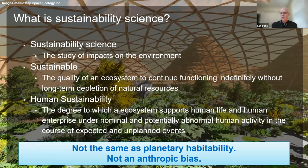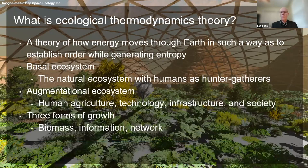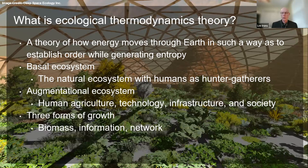In this context, we will define human sustainability as the degree to which an ecosystem supports human life and human enterprise under nominal and potentially abnormal human activity in the course of expected and unplanned events. To understand sustainability, we need to learn about ecological thermodynamics theory. Ecological thermodynamics is a theory of how energy moves through Earth in such a way as to establish order while generating entropy, resulting in an Earth that is an island of order far from thermodynamic equilibrium surrounded by an expanding entropy of space. This involves non-equilibrium thermodynamics.